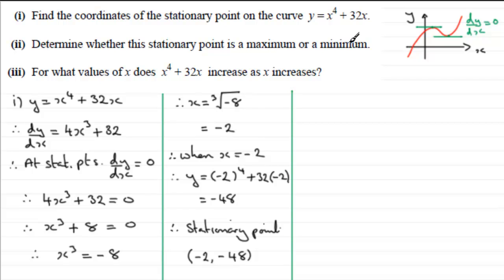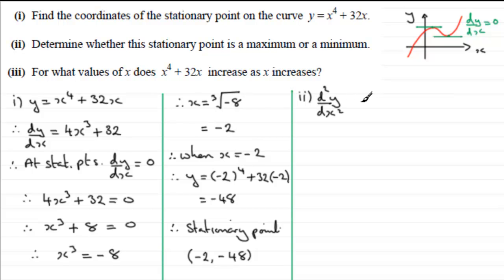In part 2 we need to determine whether the stationary point is a maximum or a minimum. There are two ways to tackle this: you can work out the second differential d²y/dx² and check its sign when you substitute your x value — positive means minimum, negative means maximum — or you can use the gradient method. We'll look at both.